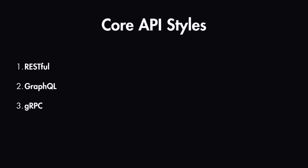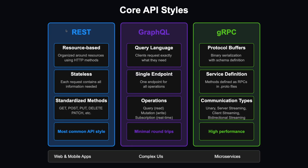The most important API styles you'll encounter during the design phase are RESTful, GraphQL, and gRPC. The most common one is REST, which stands for Representational State Transfer. These APIs use a resource-based approach by using HTTP methods as a protocol.